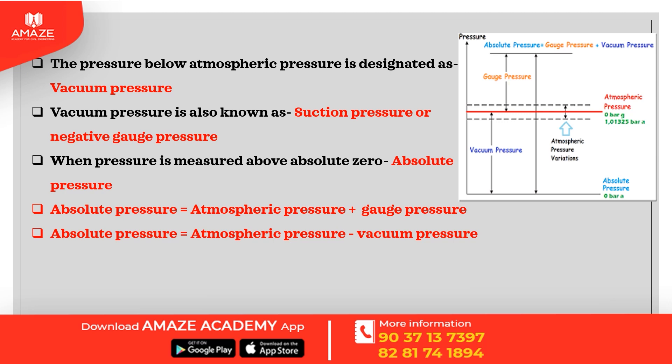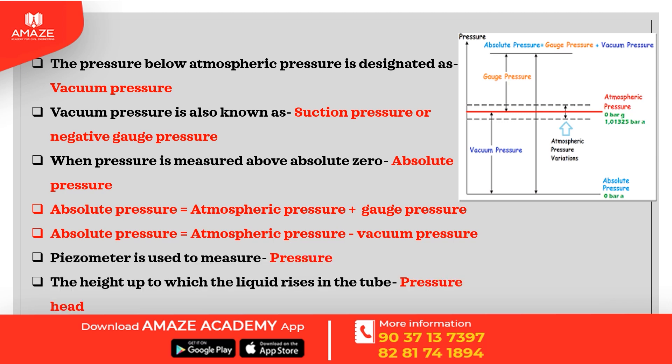Absolute pressure is equal to atmospheric pressure plus gauge pressure, and also equal to atmospheric pressure minus vacuum pressure. A piezometer is used to measure pressure; the height up to which the liquid rises in the tube is the pressure head.